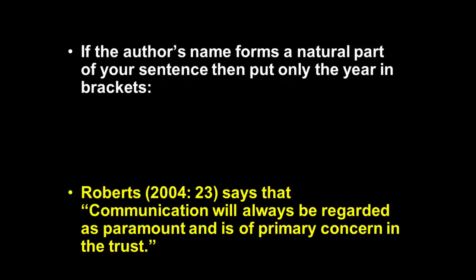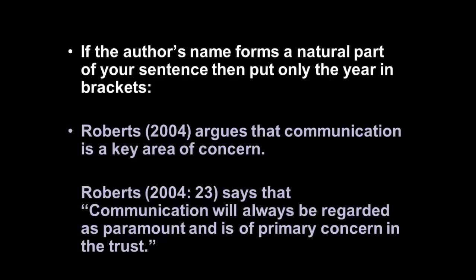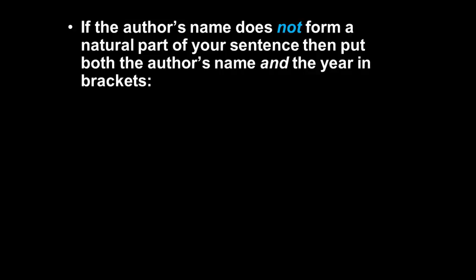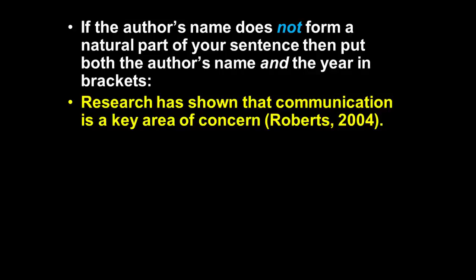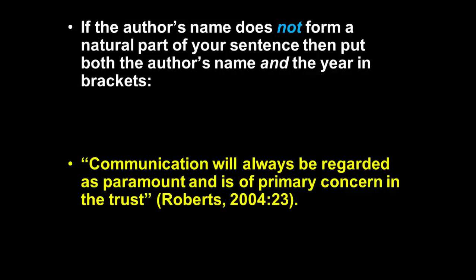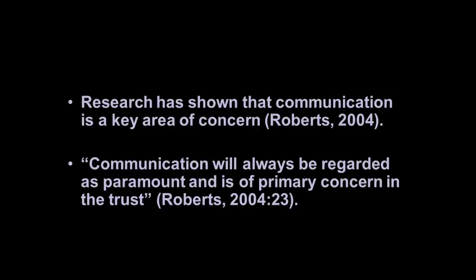What if the author's name does not naturally form part of the sentence? In that case, both the author's name and the year go inside the brackets — for example, 'Research has shown that communication is a key area of concern (Roberts, 2010).' You may notice that the author's surname tends to go inside the brackets when the citation occurs at the end of a sentence, and outside when it occurs at the beginning. However, it's not always that straightforward, and you'll need to consider whether the author's name needs voicing as part of the sentence.